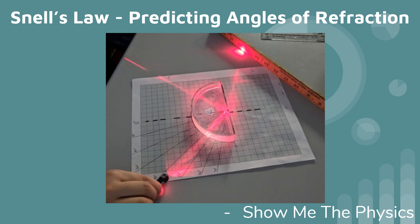If light enters a new medium at an angle greater than zero degrees and changes speed, it bends. This phenomena is called refraction.